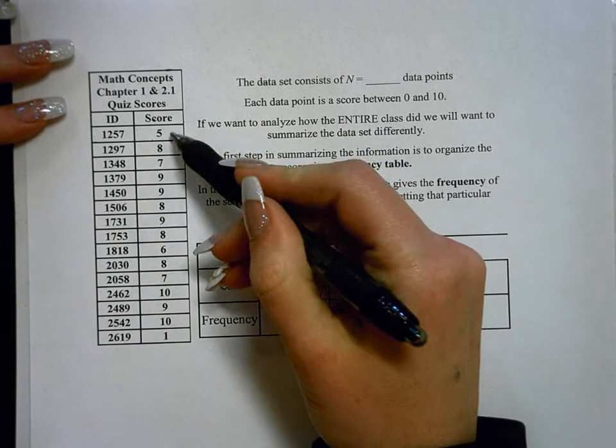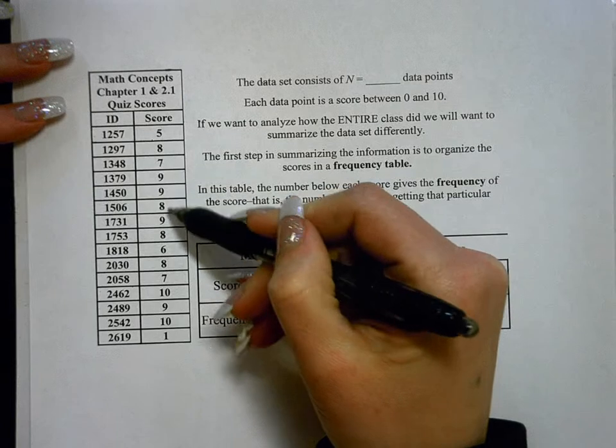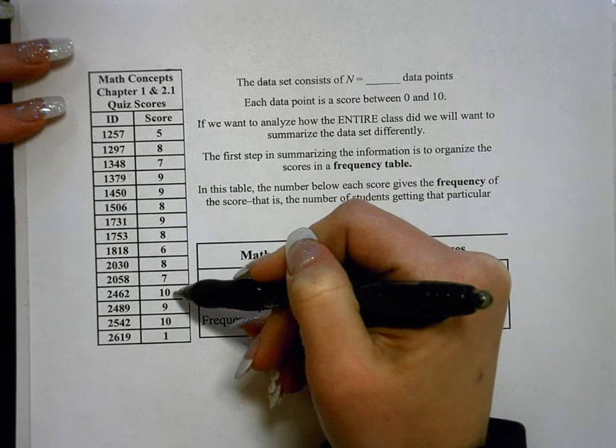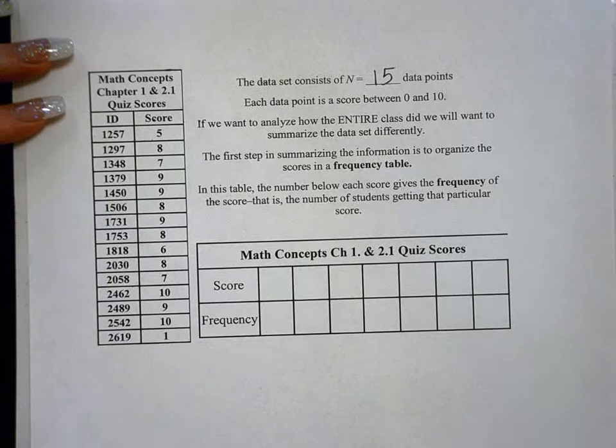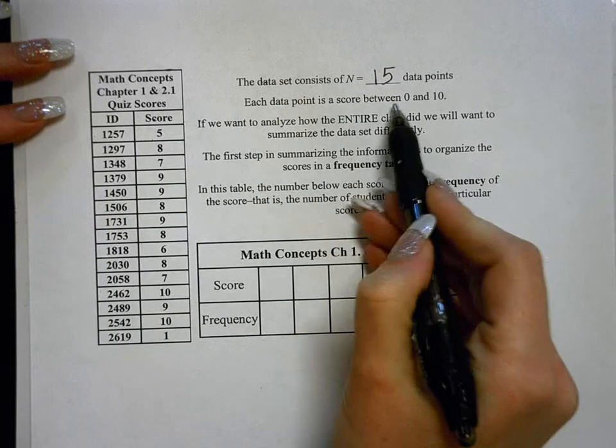And you just count up the scores. So 1, 2, 3, 4, 5, 6, 7, 8, 9, 10, 11, 12, 13, 14, 15. So it consists of 15 data points. Again, each data point is a score between 0 and 10.